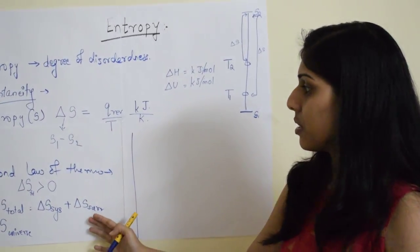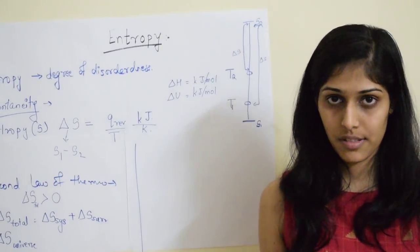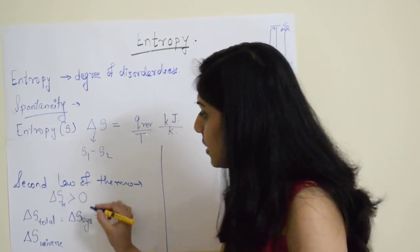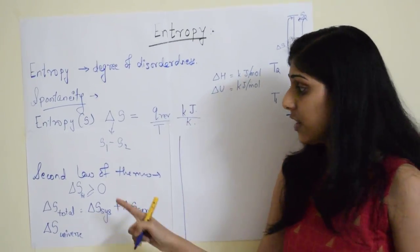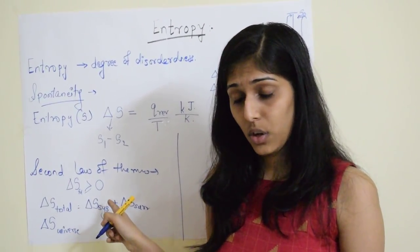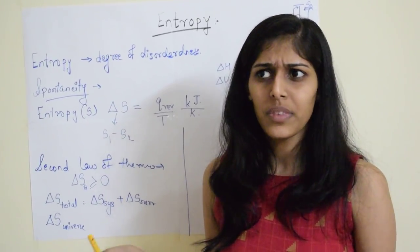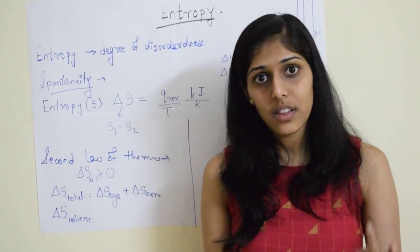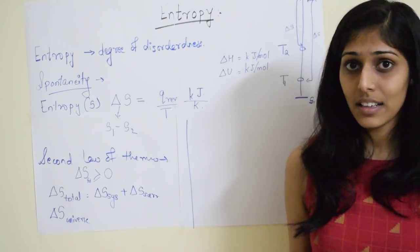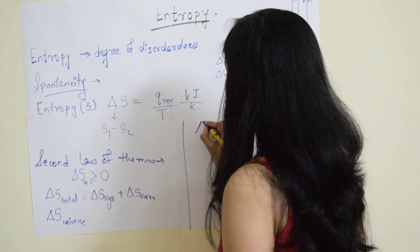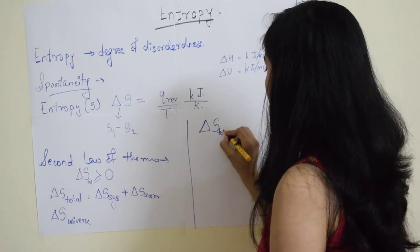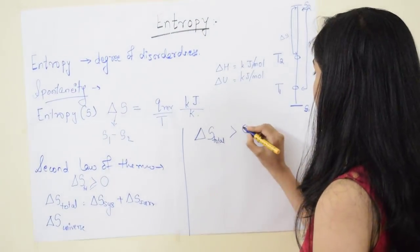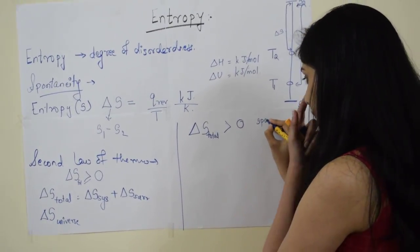There are some conditions that also need to be discussed. If delta S total is greater than 0, the system will undergo a spontaneous process. If delta S total is less than 0, the system will be non-spontaneous, meaning it requires external influence to proceed.